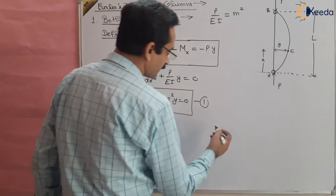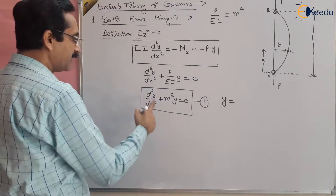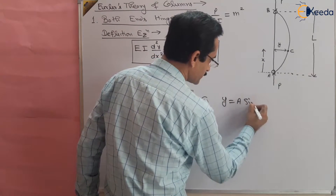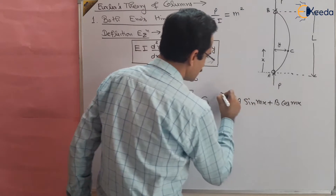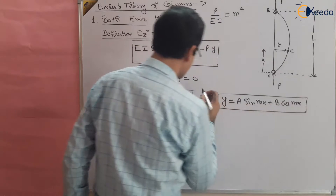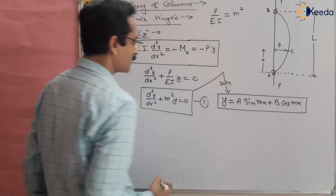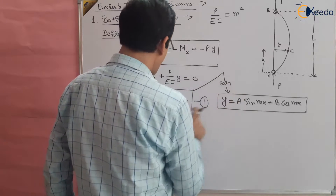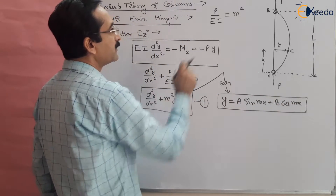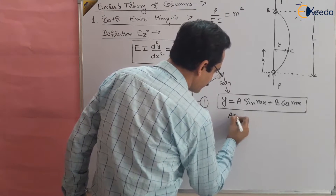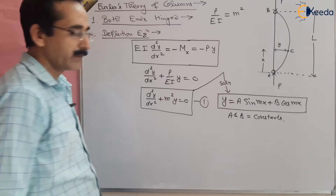The solution of this differential equation is: y = A·sin(mx) + B·cos(mx), where A and B are unknown constants, and m is defined such that m² = P/EI. We need to find A and B using the boundary conditions.